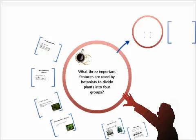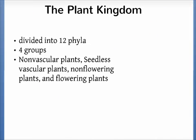What three important features are used by botanists to divide plants into four groups? First off, we should look at how plants are classified. The plant kingdom is divided into 12 phyla, and these phyla are gathered into four groups: non-vascular plants, seedless vascular plants, non-flowering plants, and flowering plants. These four groups are based on the evolutionary history of significant features in plants.